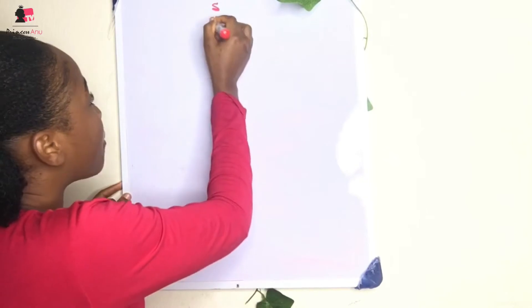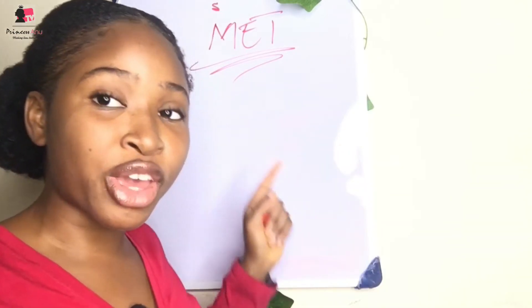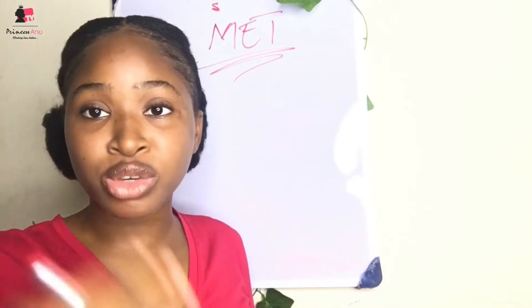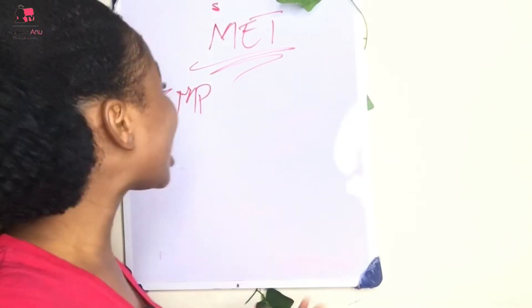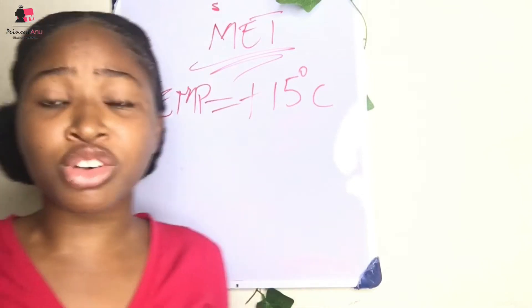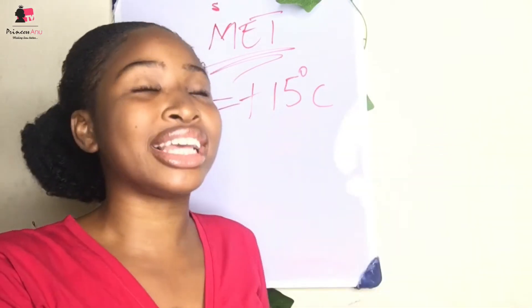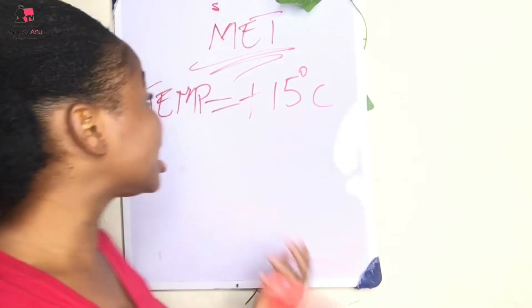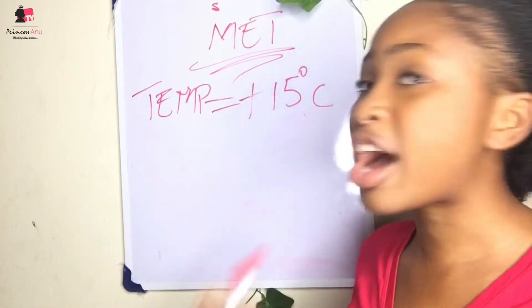We're defining the EASA temperature and the mean sea level temperature — we touched on it yesterday when we used it to solve problems, but we'll cover it again today. This is the last episode on atmosphere for meteorology. The EASA standard mean sea level temperature is plus 15 degrees Celsius. We use this for most of our calculations. And it's not only in meteorology — you also reference this in aerodynamics and in navigation.